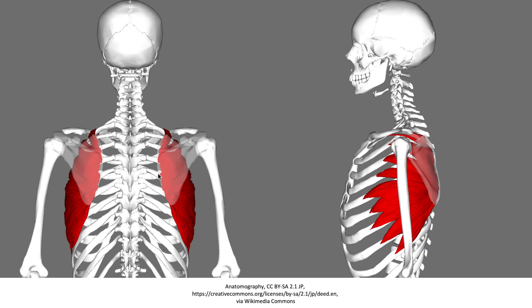That leaves us with the serratus anterior. This is a very interesting muscle — it originates at the surface of the ribs, wraps around the thoracic cage, and goes underneath the scapula, which you can see here shown translucently. It then attaches to the medial border of the scapula, also known as the vertebral border because it's closer to the vertebral column. This muscle is responsible for stabilizing and holding the scapula against the thoracic cage.